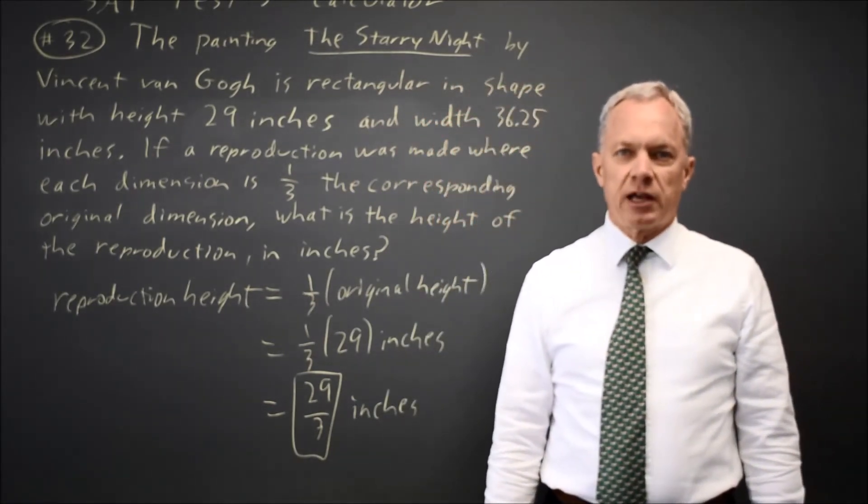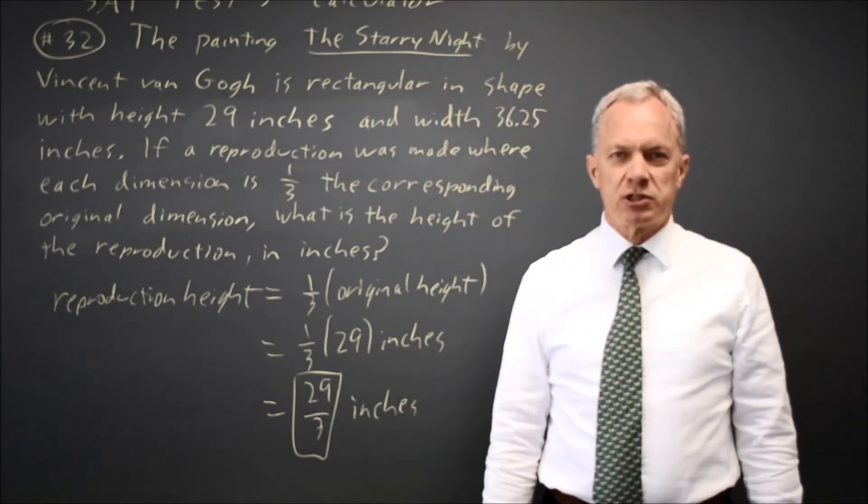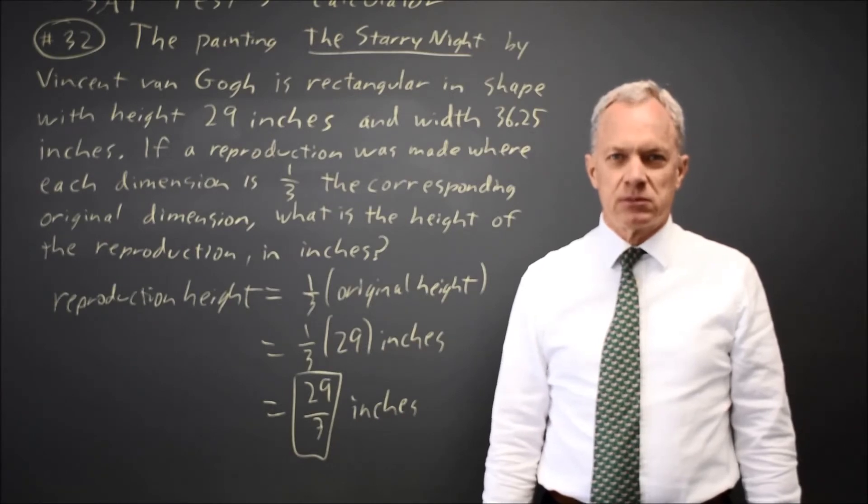The College Board is just asking for a proportion, and the proportion is one-third of the original. The College Board often asks questions based on proportions.